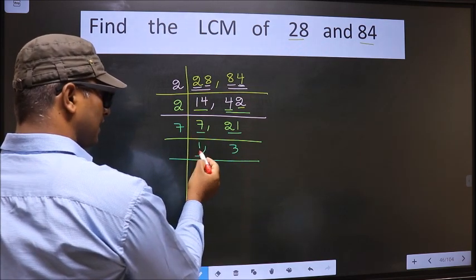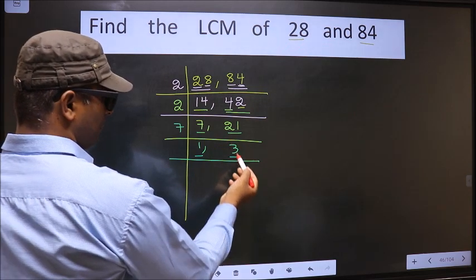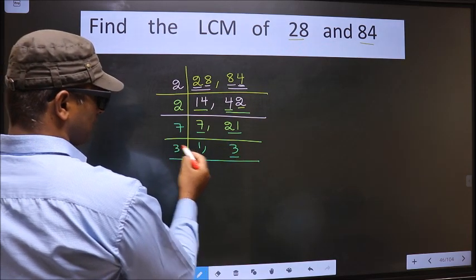We got 1 here. So focus on the other number, that is 3. 3 is a prime number. So 3 ones, 3.